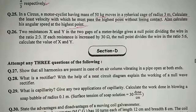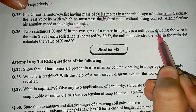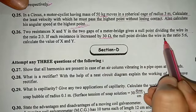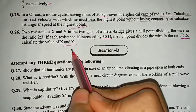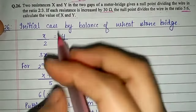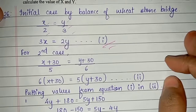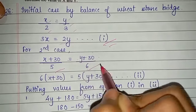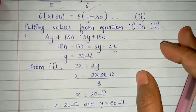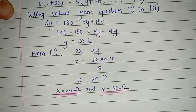Question number 26: two resistances X and Y in a meter bridge give a null point dividing the wire in ratio 2:3. When each is increased by 30 Ω, the null point divides in ratio 5:6. First case: X/2 = Y/3, giving 3X = 2Y (equation 1). Second case: (X+30)/5 = (Y+30)/6. Solving simultaneously, X = 20 Ω and Y = 30 Ω.